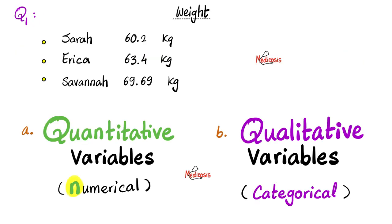Here's the first question. We're talking about weights. Sarah's weight is 60.2 kilograms, Erica 63.4 kilograms, Savannah's 69.69 kilograms. What kind of variables are these? Would you call them quantitative variables or numerical, or would you call them qualitative variables, categorical? Please pause the video and try to answer this yourself. Well, since I can put numbers on them, as you see, therefore these are numerical or quantitative variables.